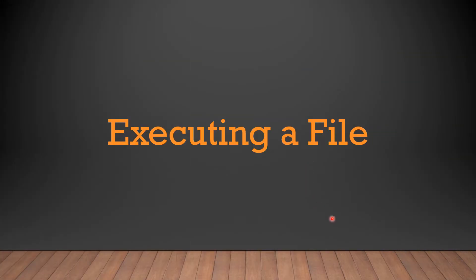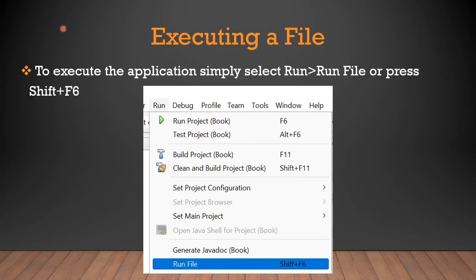Now let us proceed to our next topic — executing a file. To execute the application, simply select Run > Run File, or press Shift + F6. As we have already run many files in previous examples, you already know how to run a file. Go to the menu bar, select the Run option, then click on Run File. The shortcut key is Shift + F6. By any of these methods, you can run the file.